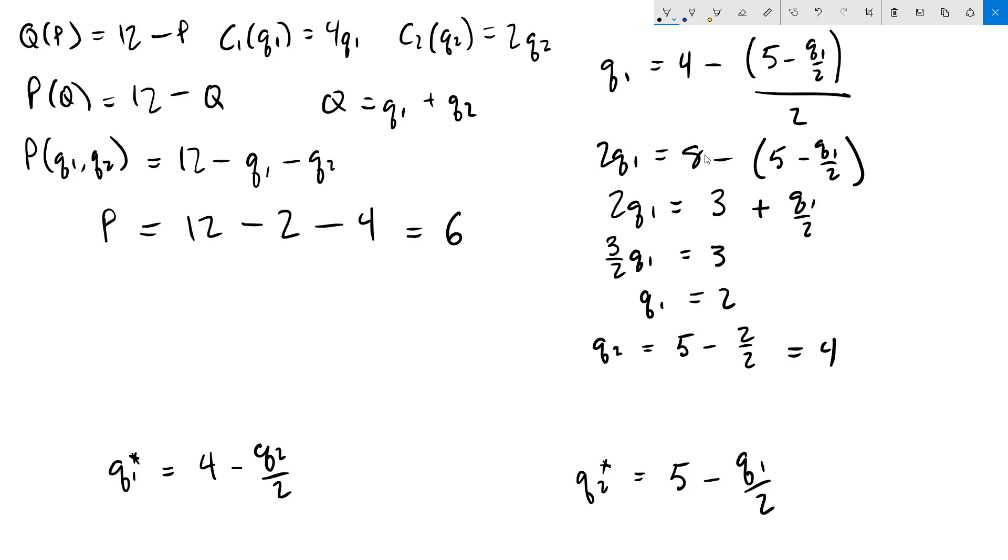Part C asks us to figure out the profit. We'll start with firm 1. Firm 1's profit is their revenue minus cost. Revenue is a price of 6 times a quantity of 2 minus total cost of 4q1, which is 2, and that comes out to 4. For firm 2, same thing. Price times quantity, but quantity is now 4, and the total cost 2 times 4, which is 16.